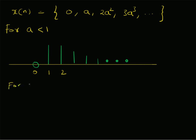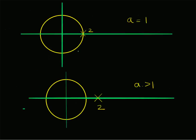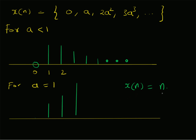For a = 1, the values of the signal are: at n = 0, x(0) = 0; at n = 1, x(1) = 1; at n = 2, x(2) = 2; at n = 3, x(3) = 3; and so on. The values keep increasing — it is a linearly increasing function. In fact, x(n) = n. Therefore, for two poles on the unit circle (a = 1), the time domain signal x(n) = n is an increasing signal.